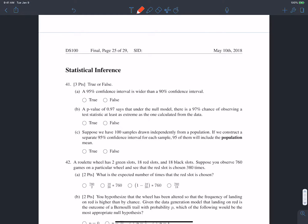OK, now let's move on to the statistical inference portion of the exam. 41A asks, true or false, a 95% confidence interval is wider than a 90% confidence interval.